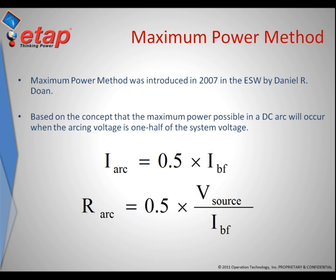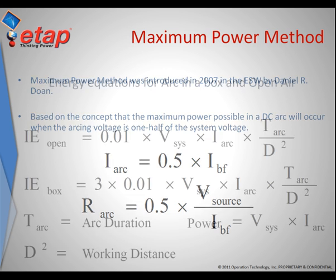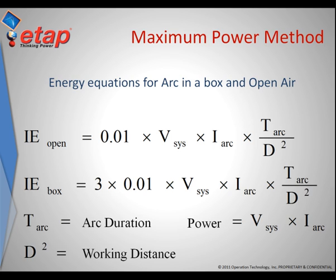The maximum power method is based on the fundamental concept that the maximum power delivered by the DC arc will occur at the point where the impedance of the system matches the resistance of the arc. This can also be defined as the point where the arcing current is half of the short circuit current, or the arc resistance is half of the source voltage divided by the DC short circuit current. Using the voltage drop calculations, one can determine these relationships.